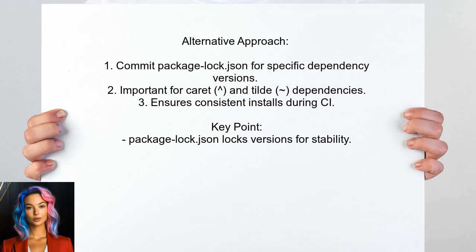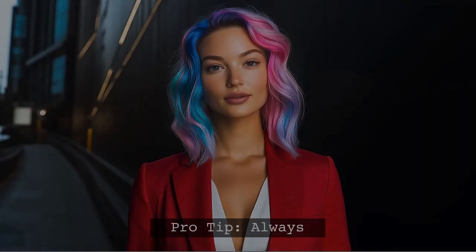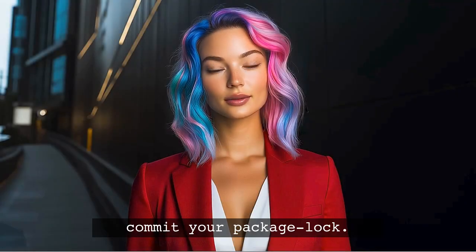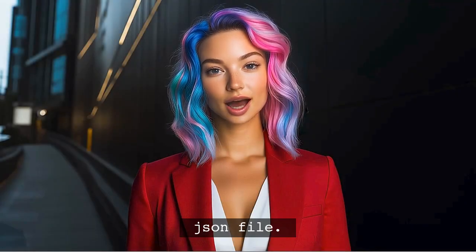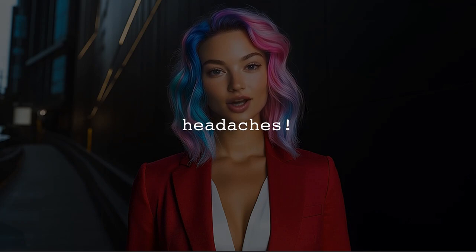A third user suggests that committing the package-lock.json file ensures your project uses specific versions of dependencies. This is especially important if your package.json includes caret or tilde symbols, which allow for updates during continuous integration. So remember this pro tip: always commit your package-lock.json file — it's a small step that can save you and your team a lot of headaches down the road.